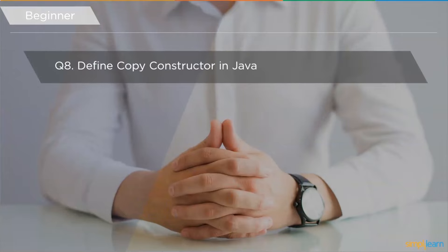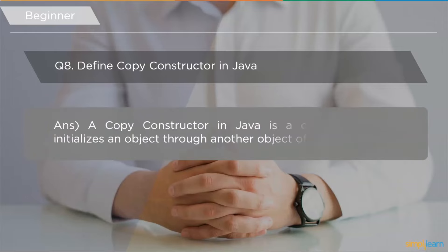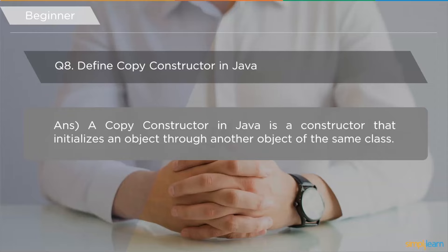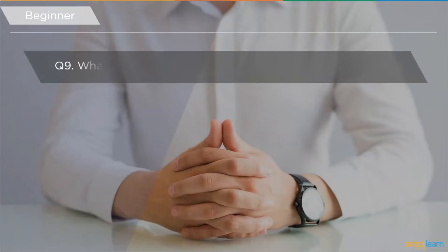The eighth question is: define copy constructor in Java. A copy constructor in Java is a constructor that initializes an object through another object of the same class. It is helpful when you want to copy a complex object with several fields, or when you want to make a deep copy of an existing object.